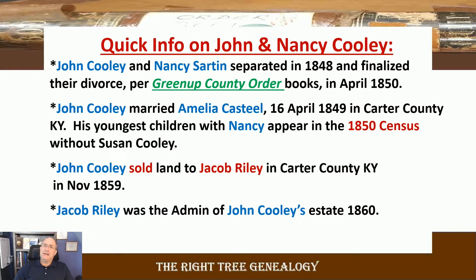John was remarried on April 16th, 1849, to Amelia — or Millie — Castile. This affects the 1850 census, because the youngest children he had with Nancy are listed with him and his new wife, but Susan Cooley is not. She would have been about 16 and could have been with other family members. Another important point: John sold land to Jacob Riley, her husband, in 1859. Then Millie gave up her rights as administrator of the estate, and Jacob Riley put up the bond to administer John Cooley's estate when he passed away in 1860.